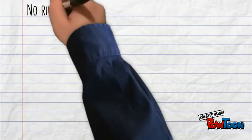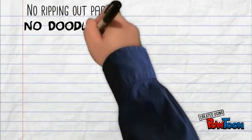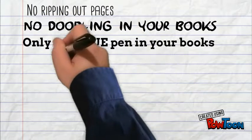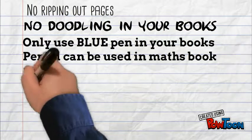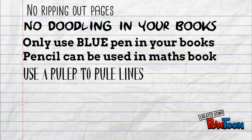Here are the rules for all books. No ripping out pages. No doodling in your books. Only use blue pen. Pencil could be used in your maths book. Use a ruler to rule lines.